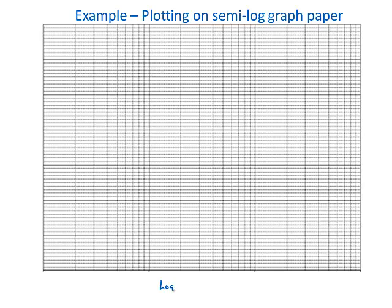In this example, we will use semi-logarithmic graph paper, also called semi-log paper. Semi-log graph paper uses a logarithmic scale for one axis and a linear scale for the other axis. Full logarithmic graph paper, also called log-log paper, uses a logarithmic scale for both axes.